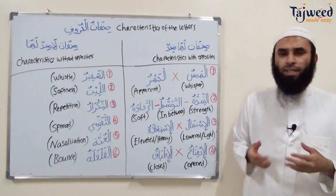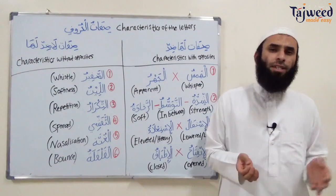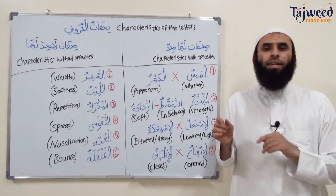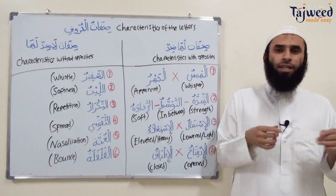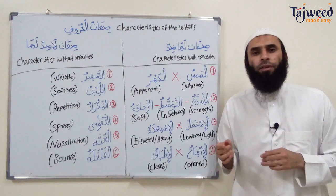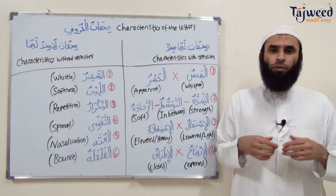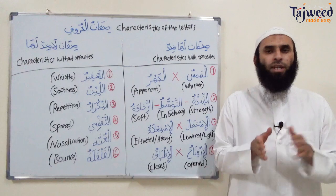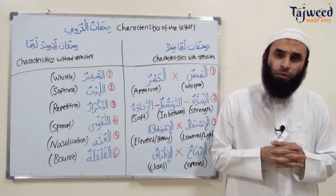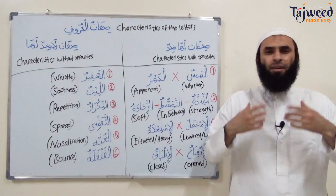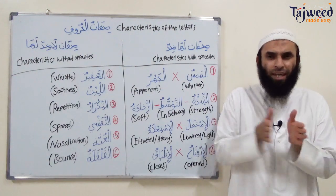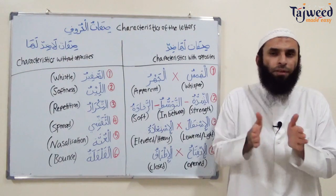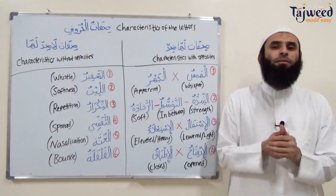So we find out which letters are heavy and which letters are light. We find out which letters air flows with, and which letters air does not flow with. We find out which letters sound flows with, and which letters sound does not flow with. Which letters have a nasalization sound, which letters have an echo effect — a bouncing effect — and so on.